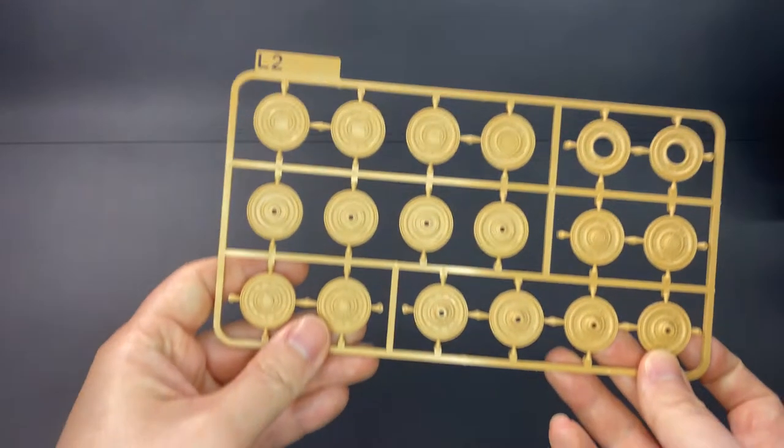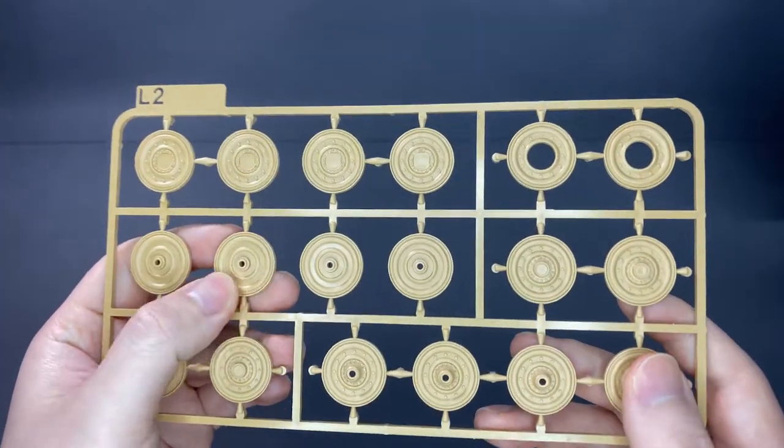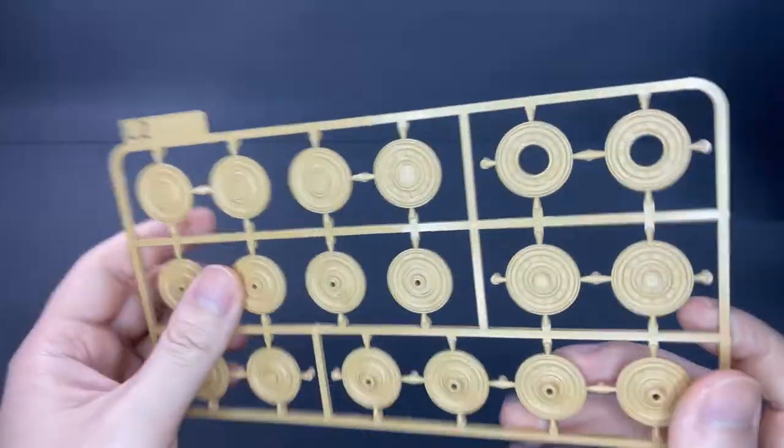Sprue L2, there are also two of these sprues. The infamous staggered German road wheels of World War II. No visible mold lines, so no complaints at all.